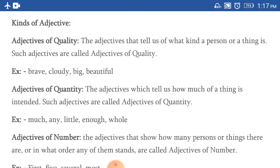Second is adjectives of quantity. The adjectives which tell us how much of a thing is intended. Such adjectives are called adjectives of quantity. Yahan jessa ki naam suggest karta hai, yeh kisi noun ki quantity ke baare me batata hai. Quantity, lekin ek fixed number nahi. Examples: much, any, little, enough, whole.